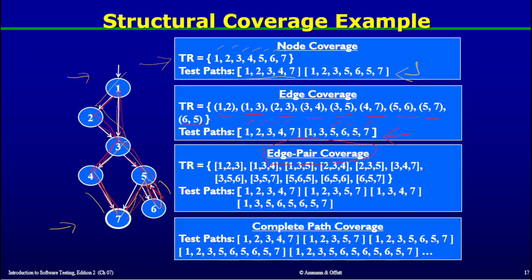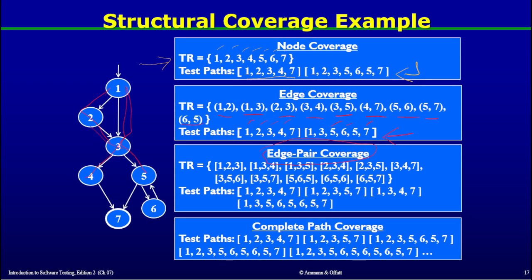For edge pair coverage, we are looking for paths of length up to two. The edge pairs to cover are: (1,2,3), (1,3,4), (1,3,5), (2,3,4), (2,3,5), (3,4,7), (3,5,6), (3,5,7), (5,6,5), (6,5,6), and (6,5,7).